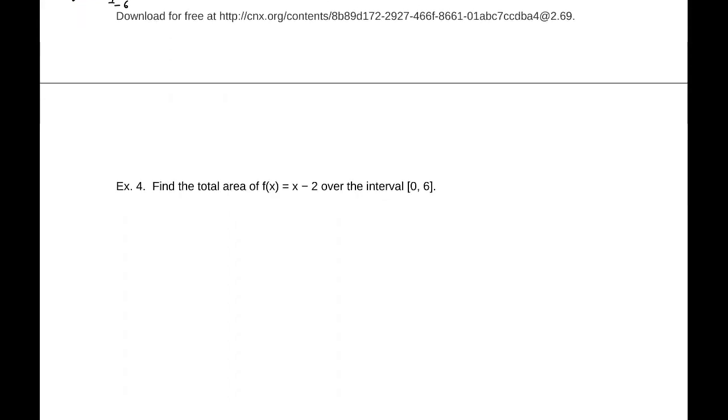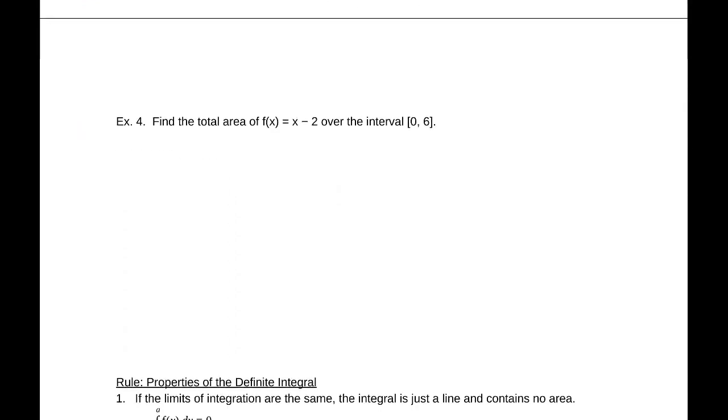Let's see if we can hammer that out a little bit more. Find the total area of f(x) = x - 2 underneath this curve, over the interval from 0 to 6. At a value of 0, this function is -2. And at a value of 6, this is at 4. And it's a linear function, so we have something that looks like that.